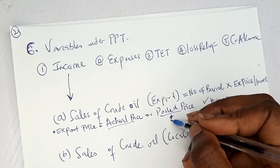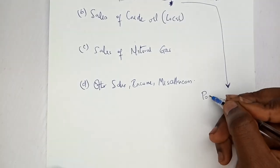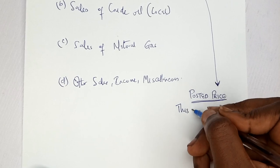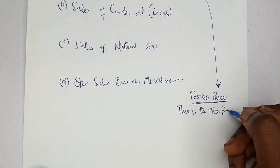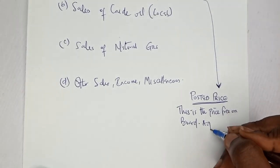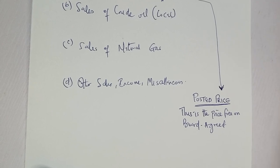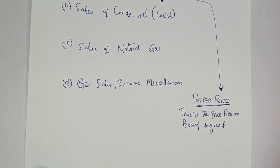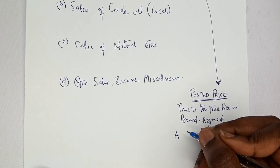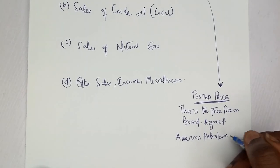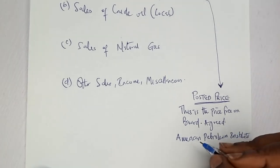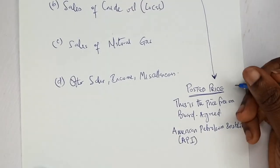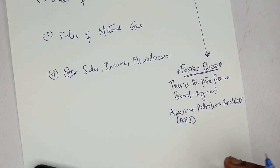The posted price is the price free on board — an agreed price between governments and companies for purchasing crude oil. The API (American Petroleum Institute) measures the density of crude oil in degrees and determines the posted price. To calculate the posted price, step one is to find the difference between the standard API and the actual API.